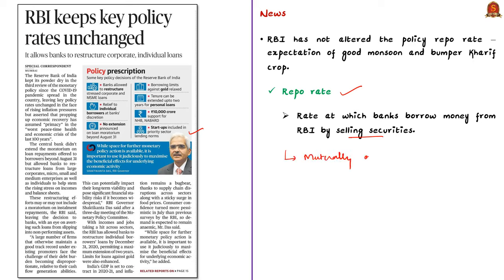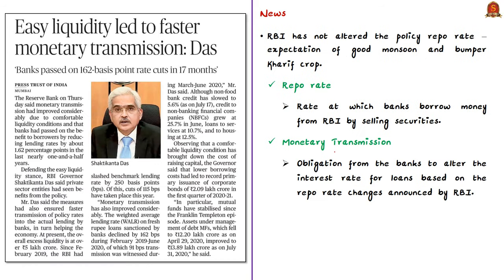When this repo rate is reduced, the obligation from the banks is to reduce the interest rates for loans — that is, the banks will extend the same gesture shown by the Reserve Bank of India to its customers. This is what is referred to as monetary transmission. One reason why RBI has not changed the repo rate is because of the expectation that a good monsoon and bumper kharif crop will help in bringing down inflation in food prices.